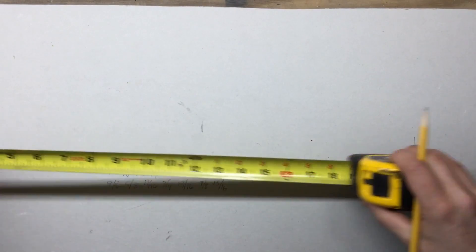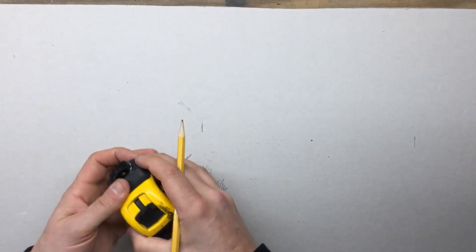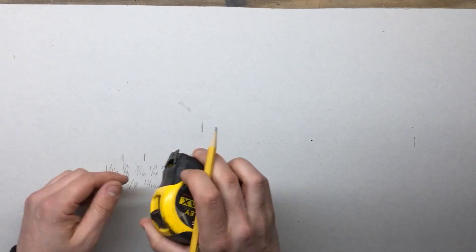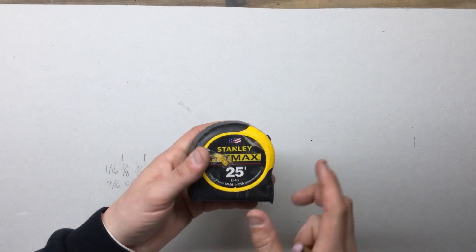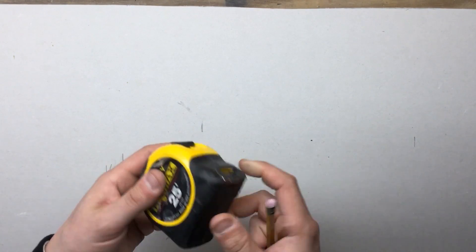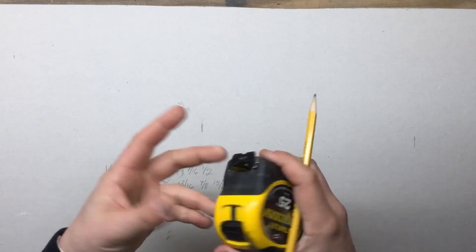Again, simple example, but when you're dealing with fractions, it makes it a whole lot easier to do it that way. So those were some simple math tricks that you can do with your tape measure to make life a little easier when you're doing your projects. Hopefully this helps out.